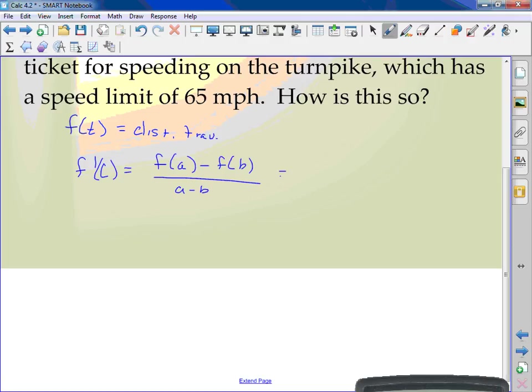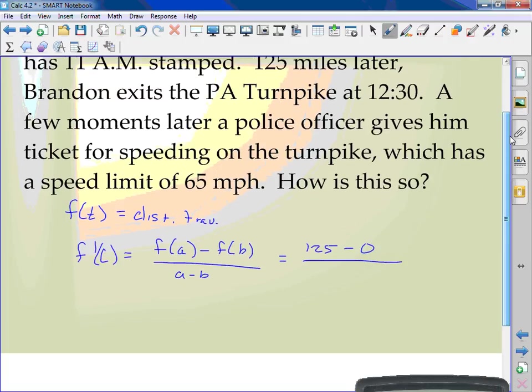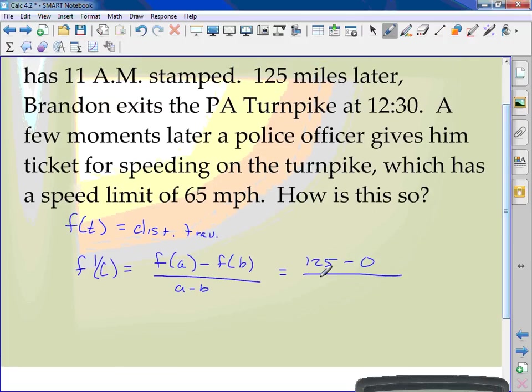How many miles did Brandon travel? He traveled 125 miles. He started at zero. What was the time difference? An hour and a half. So 1.5 minus zero. So I really have 125 divided by 1.5. So he was speeding. They take your distance and your time, divide it. It's the average.